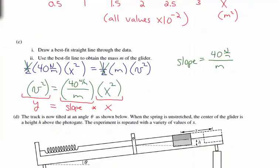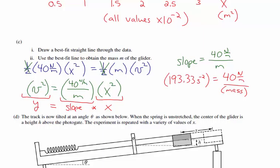Using the slope: 193.33 s⁻² equals 40 N/m divided by mass. Solving for mass gives 40 divided by 193.33, which equals 0.207 kilograms. Note that newtons per meter divided by s⁻² gives units of newton·s²/m, which is kilograms, confirming the unit analysis.